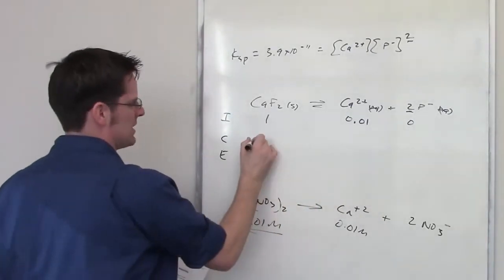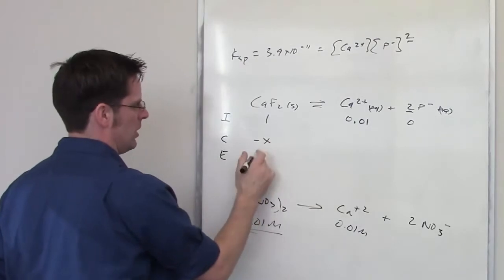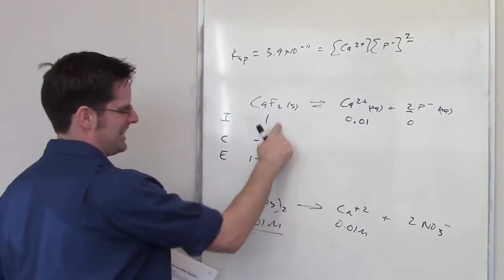Now as this reaches equilibrium, it's going to dissociate by a certain amount that we'll call x. The equilibrium concentration will then be reached by adding these two together.